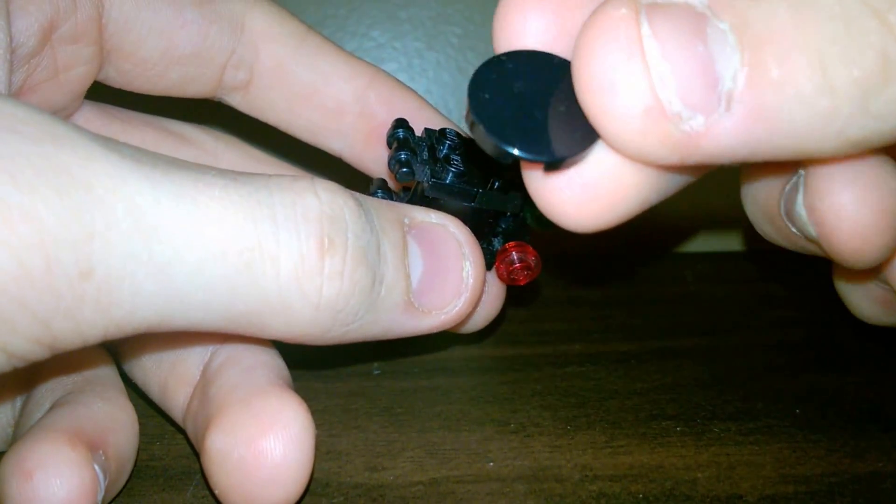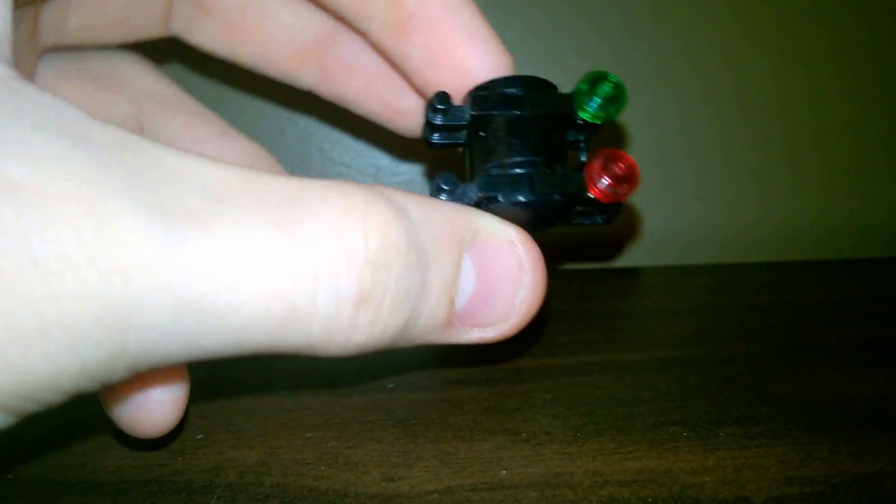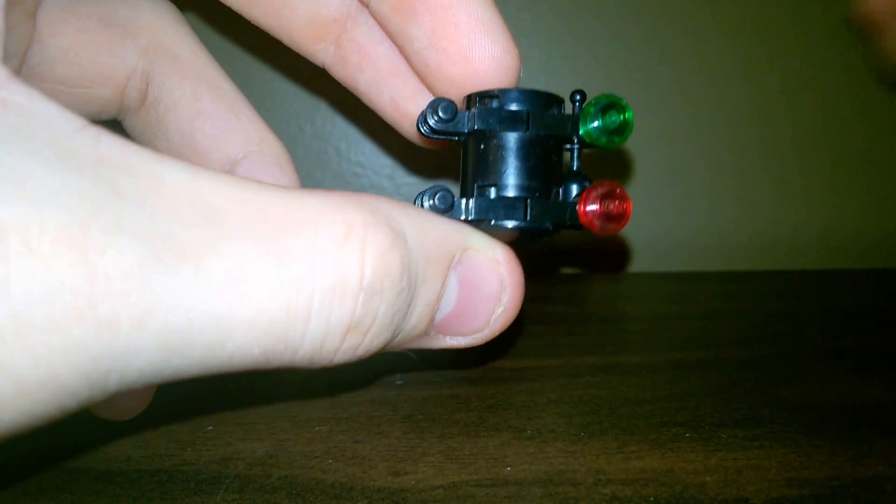Put that piece there and a 1x2 plate black. You can put it in any color that you like. And that's how you built the Lego mini kit.